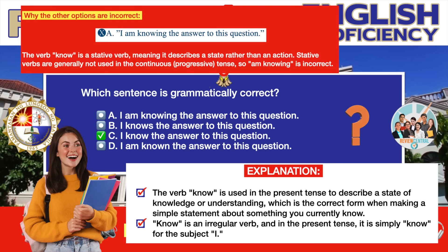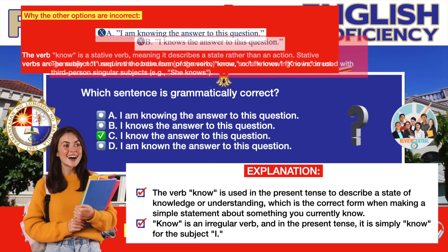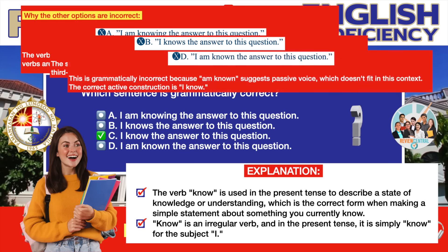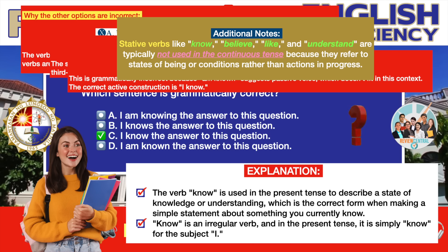Why the other options are incorrect: 'I am knowing' is incorrect because 'know' is a stative verb, meaning it describes a state rather than an action. Stative verbs are generally not used in the continuous or progressive tense. 'I knows' is incorrect because the subject 'I' requires the base form 'know,' not 'knows' — 'knows' is used with third-person singular subjects such as 'she knows.' Stative verbs like know, believe, like, and understand are typically not used in the continuous tense because they refer to states of being or conditions rather than actions in progress.